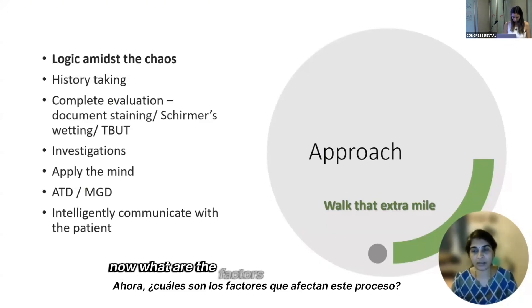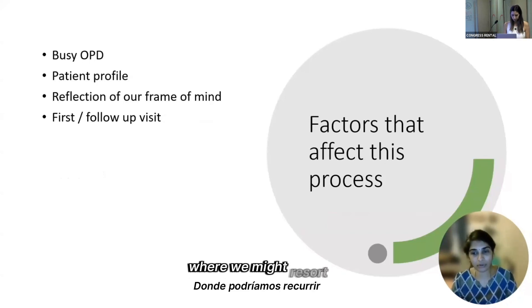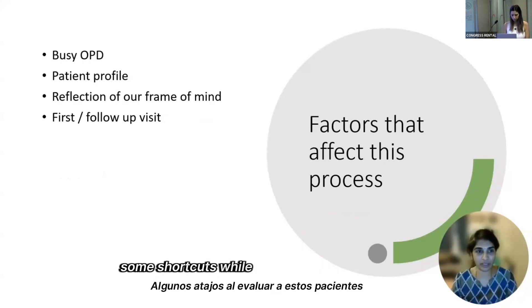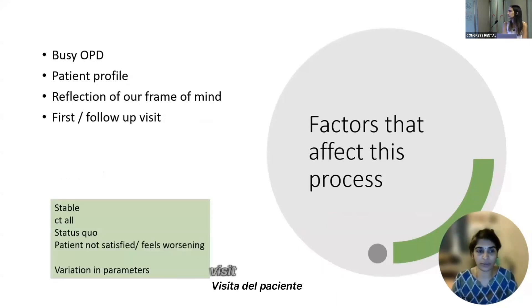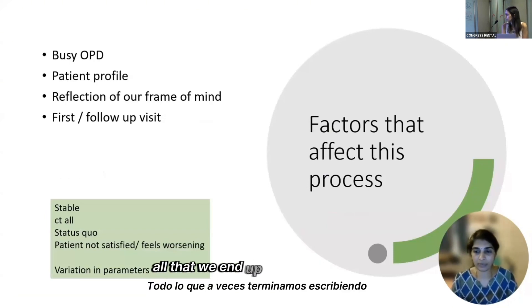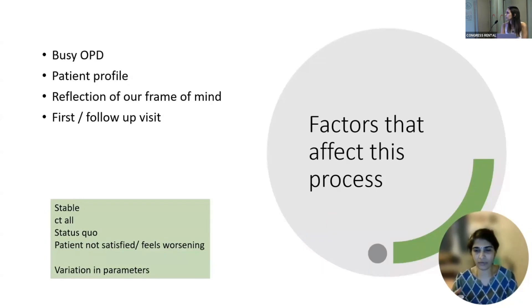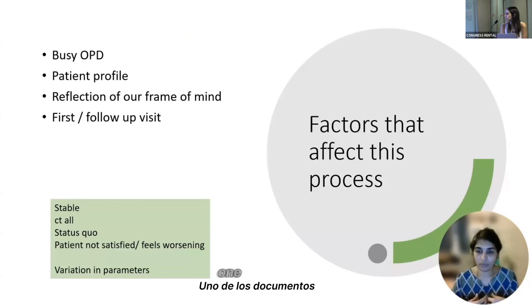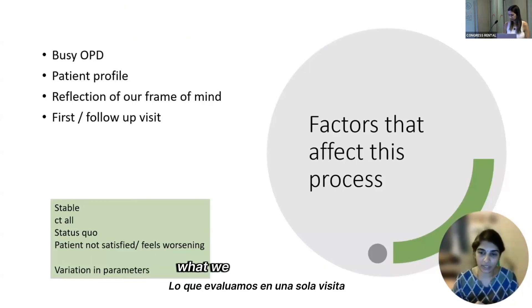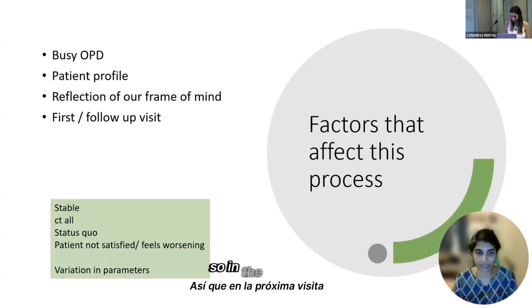What are the factors which affect this process? A very busy OPD is one where we might resort to shortcuts while evaluating these patients — the patient profile, whether it is the first visit or a follow-up. And in the end, all that we sometimes document is that the patient has dry eye, is usually stable, not satisfied, feels worsening. There's so much variation in the way one documents what we evaluate in one visit, which might be very different from what we do in the next.